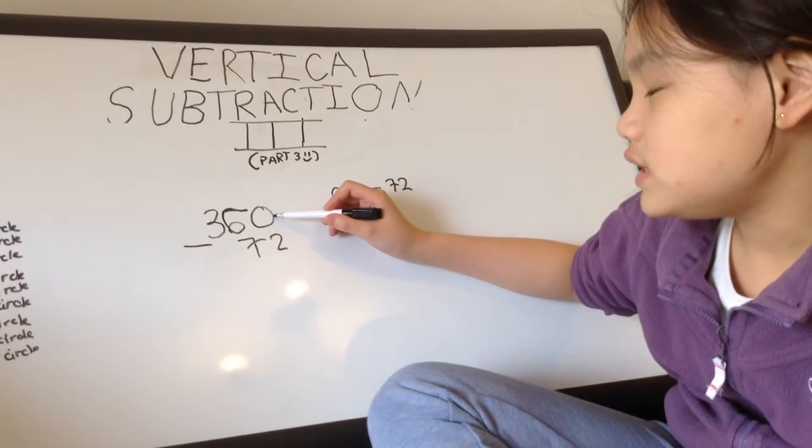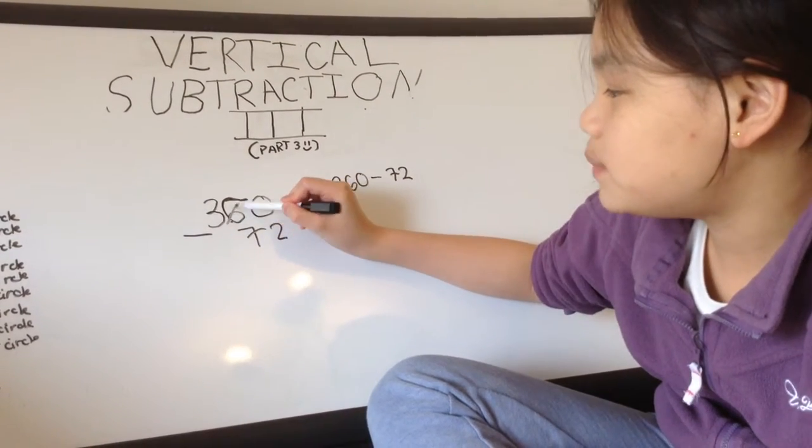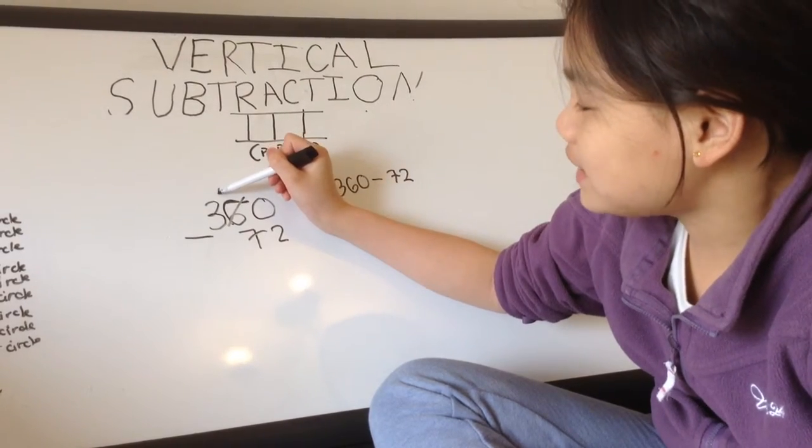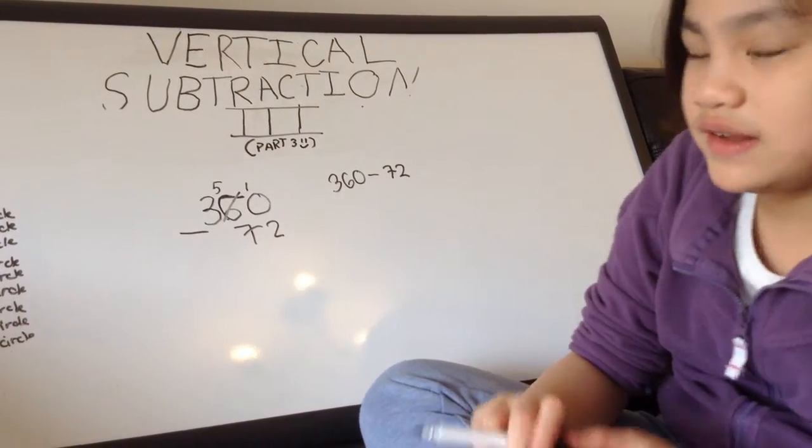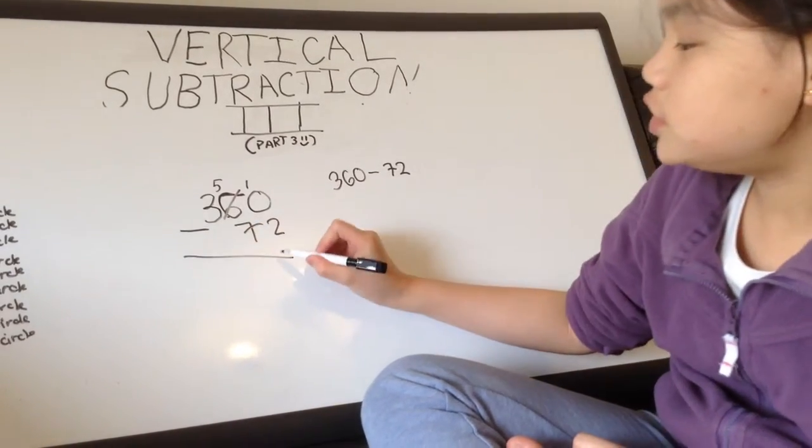We can't take away 0 take away 2, so we have to borrow from the 6, make that into a 5, and carry 1. Now it becomes 10 take away 2, which equals 8.